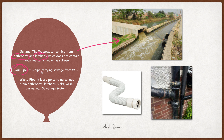Soil pipe — what does it mean? It is a pipe carrying sewage from the WC. A waste pipe is a pipe carrying sludge from the bathroom, kitchen, sink, and washing — connecting to the sewage system.